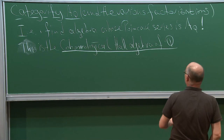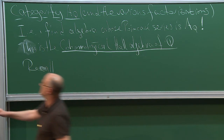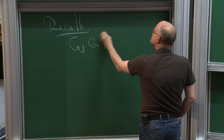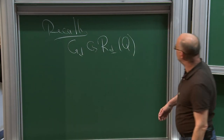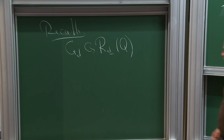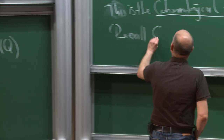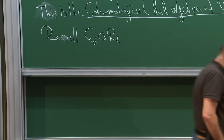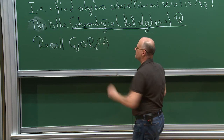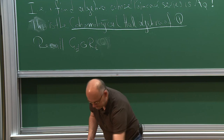First recall: the key to all the geometry of quiver representations was this idea that quiver representations of a fixed dimension vector correspond to points of some affine space on which you have a base change group. The stack of quiver representations — the stack of isoclasses — is just the quotient stack of this affine space by this group. So recall this group action. Since I will write down many of these spaces R_d, let me now omit the Q, as I will work over a fixed quiver.